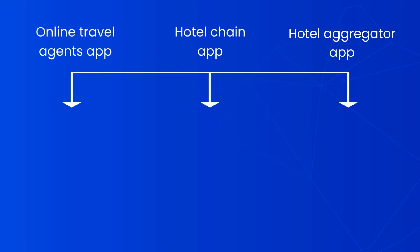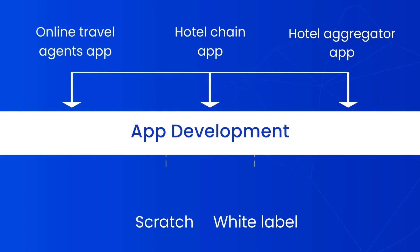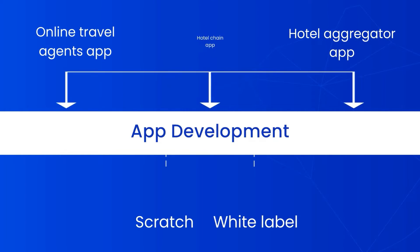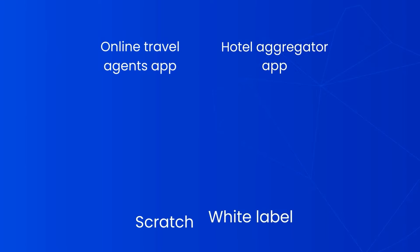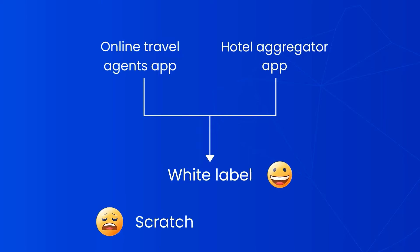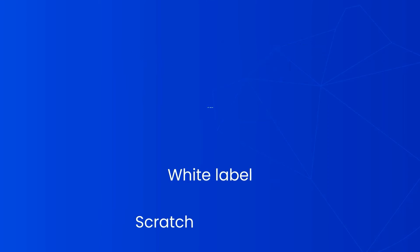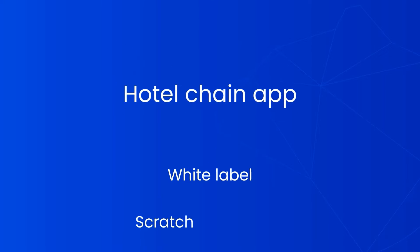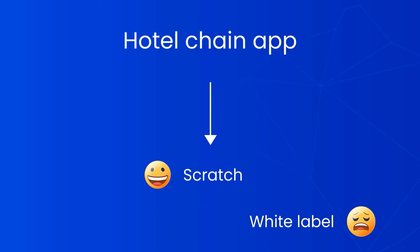The second factor is the type of application you require. The type of app you intend to build will largely impact your choice of development option. It is easy to find white label online travel agent apps and hotel aggregator apps. However, one might not always find a chain hotel app. Moreover, since hotel chains are peculiar about their application's features, developing their apps from scratch is the ideal option.